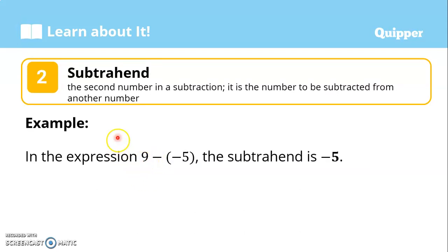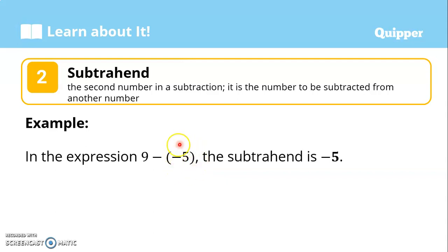Next, the subtrahend. This is the second number in a subtraction. It is the number to be subtracted from another number. In the example 9 minus negative 5, the subtrahend is negative 5. So 9 is the minuend and negative 5 is the subtrahend.